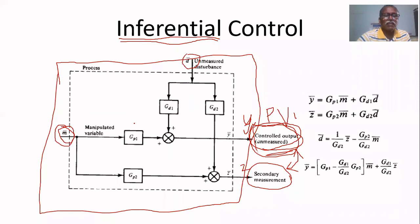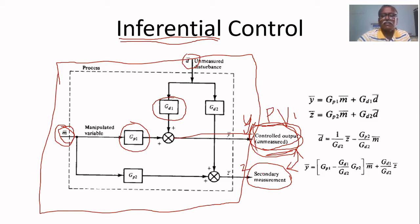If we know the mathematical model of the process, we can give m as input and get y as output. If a disturbance also enters the process, we must know the mathematical model of the disturbance. The input-output model for y is GP1 and the disturbance model is GD1. For z, the input-output model is GP2 and the disturbance model is GD2.